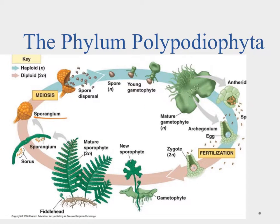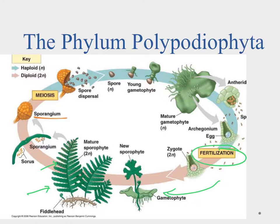In the phylum Polypodiophyta, our ferns, we start to see vascularization of tissue — the phloem and the xylem — so we can see a larger plant. When we look at the adult plant it's going to be in a diploid stage, coming through some process of fertilization. Our mature sporophyte has the frond leaves, and on the other side it has the sori where it produces the spores. The sporangium goes through meiosis and releases haploid spores.